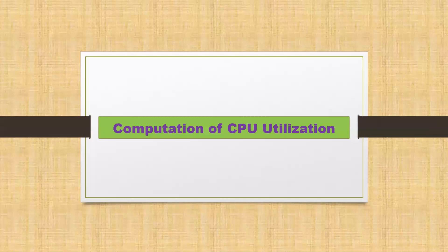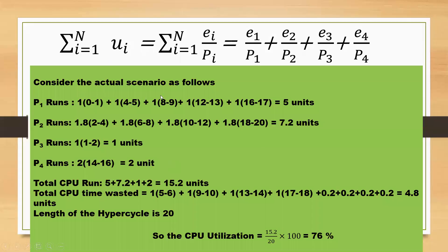Now for CPU utilization: U equals summation of Ei/Pi. P1 runs 5 units total (at 0-1, 4-5, 8-9, 12-13, 16-17). P2 runs 1.8 milliseconds at each of four intervals: 2-4, 6-8, 10-12, 18-20, totaling 7.2 units. P3 runs 1 unit (1-2), since its period equals the hyperperiod. P4 runs 2 units (14-16).